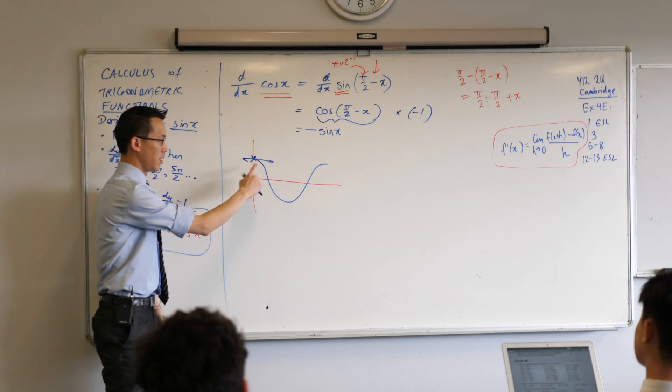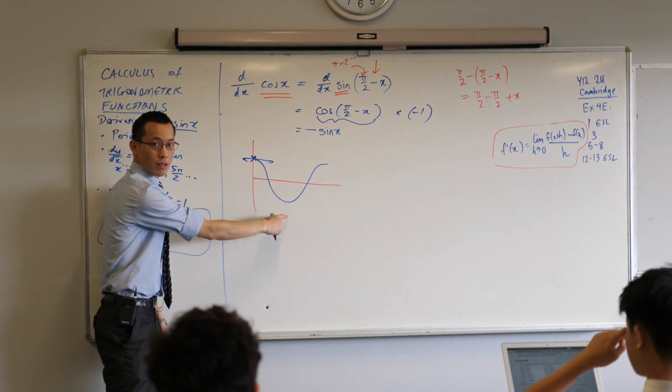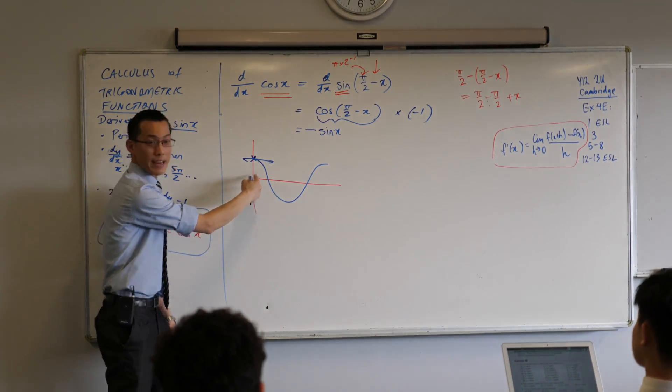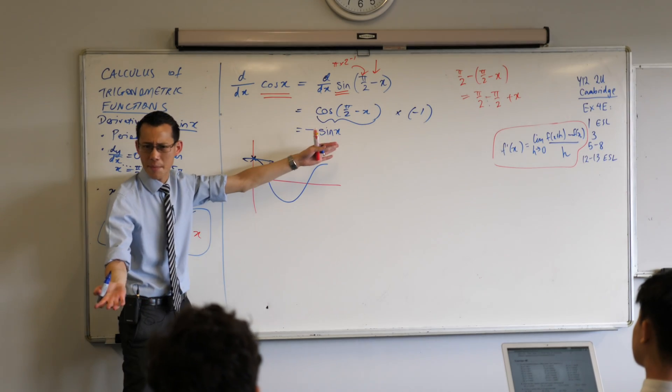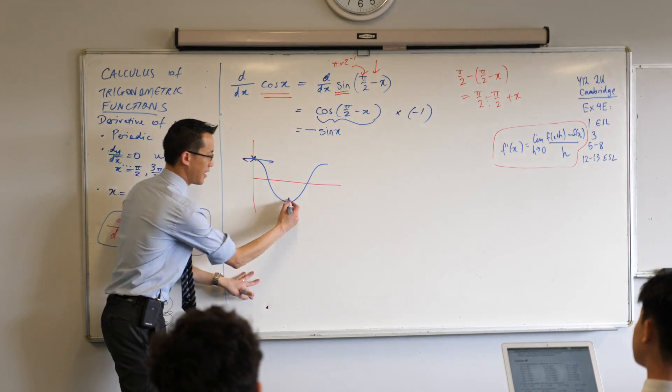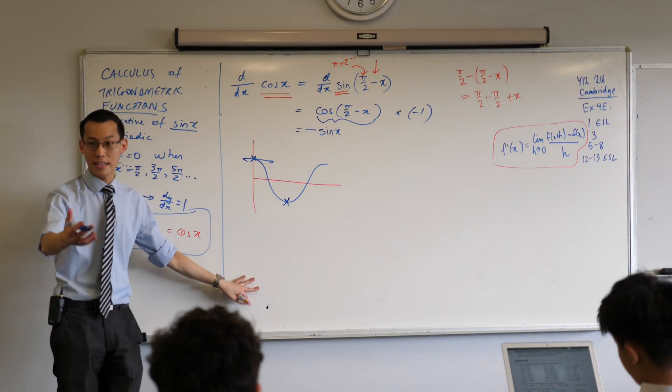Because you've got that horizontal tangent we were talking about before. As soon as you start going, is it decreasing or increasing? It's decreasing, which is why the gradient should be negative. That's why it's minus sine x, not regular sine x. Does that make sense? And then, of course, down here, you've got another stationary point.